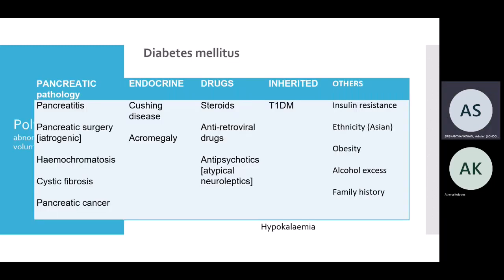Polyuria is basically passing abnormally large amounts of urine, and it's usually clear. This isn't to be confused with urinary frequency or polydipsia. Urinary frequency is when you're frequently voiding your bladder but the volume can be reduced or normal — this is where you need to start differentiating between lower urinary tract symptoms, UTIs, and this is where history really comes into play. Polydipsia is increased thirst, which can lead to increased frequency, but volume may not be affected.